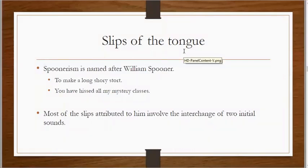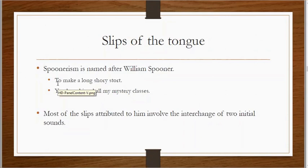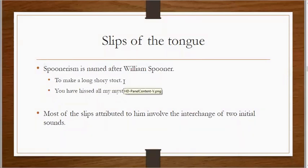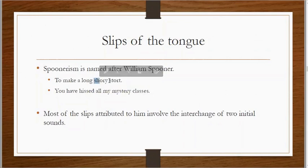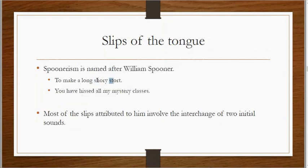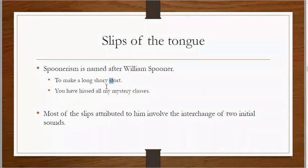There is a slip of the tongue phenomenon, also called spoonerism, named after William Spooner. Looking at an example: 'to make a long shorty start' — these two sounds have been interchanged. It should have been 'to make a long story short,' but we said 'to make a long shorty start.' So two words got their initial sounds exchanged, and this phenomenon is called slip of the tongue.